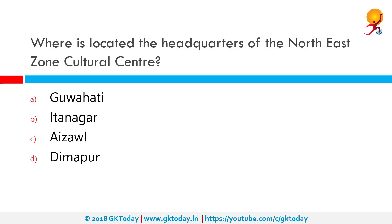Where is the headquarters of the North East Zone Cultural Centre located? There are seven zonal cultural centres functioning as autonomous bodies under the Ministry of Culture. They were set up in 1985 to 1986. The seven centres and their headquarters are: North Central Zone Cultural Centre is Allahabad, North Zone Cultural Centre is Patiala, and West Zone Cultural Centre is Udaipur.